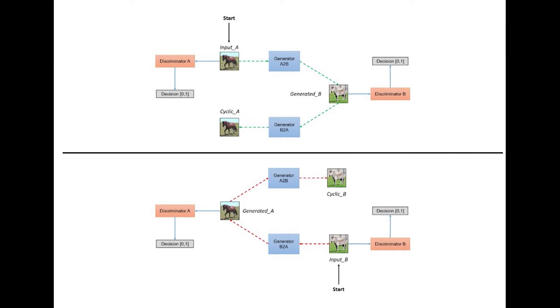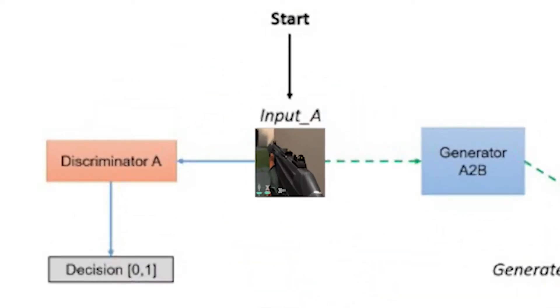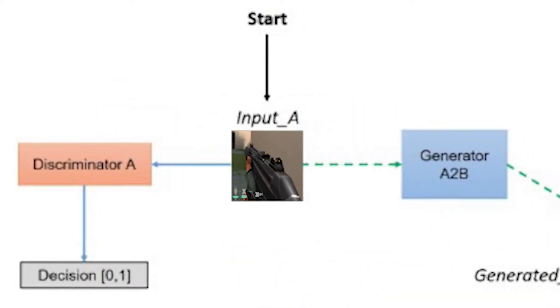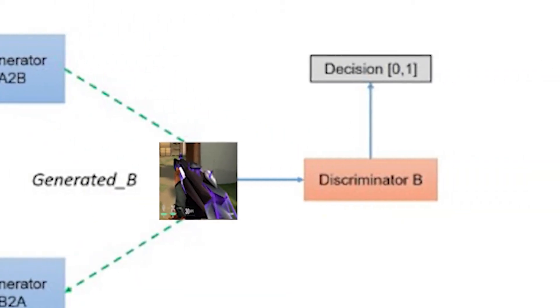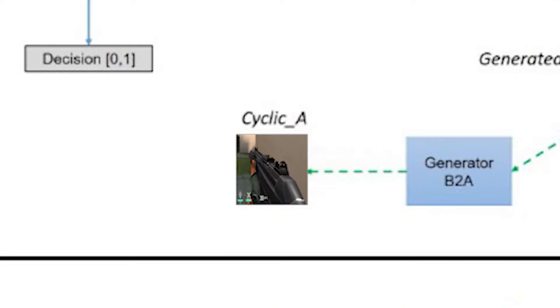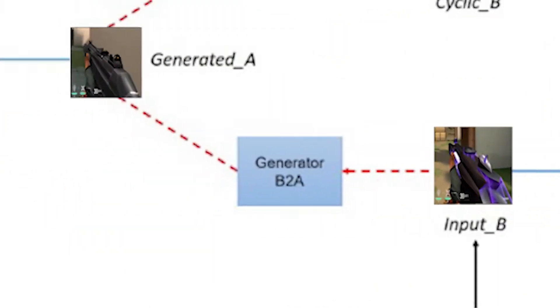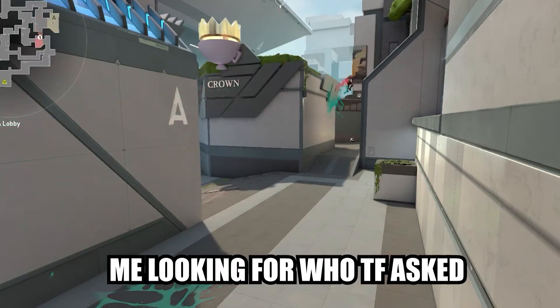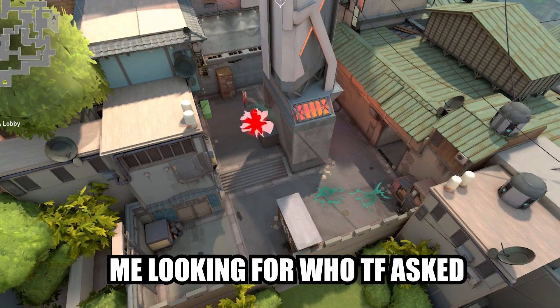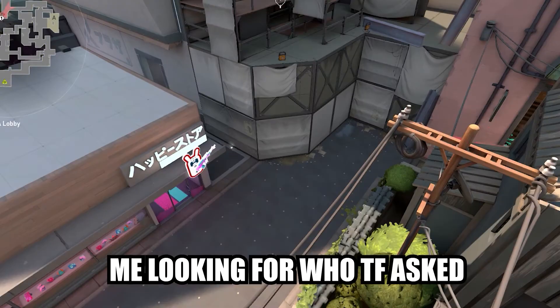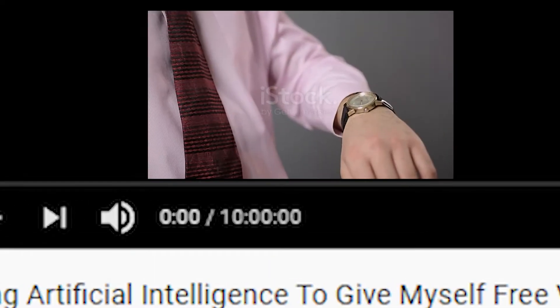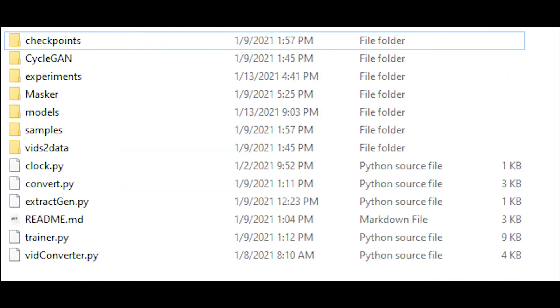First, I'll replace the horse-zebra pictures with the weapon skin pictures. The A2B generator will take in photos and a discriminator will judge if that image is fake. Explaining all of this in depth would take way too long for this video, so I'll just explain what I did and none of the original stuff.